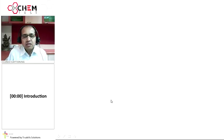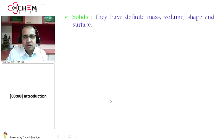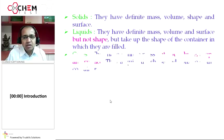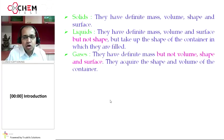In solid state, they have a definite mass, volume, shape, and surface. In liquid state, they have a definite mass, volume, and surface, but not shape. They always acquire the shape of the container in which they are filled. In gaseous state, they have a definite mass but not volume, shape, and surface. They always acquire shape and volume of the container in which they are filled.